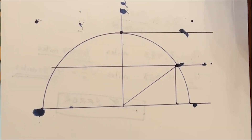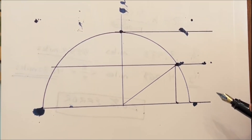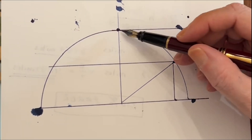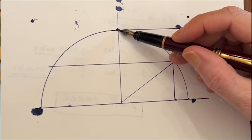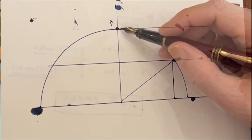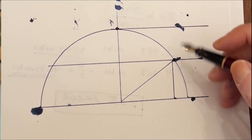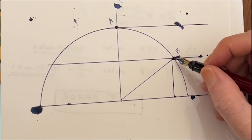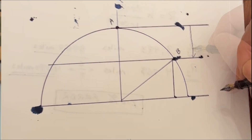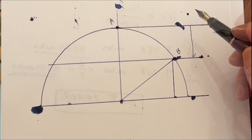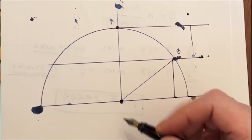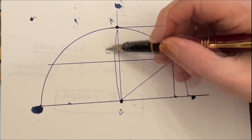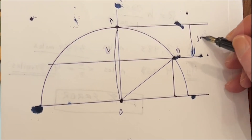Now my pen decided to have a seizure today, so all these little ink splotches will just add to the hominess of the presentation. Say that you are on the surface of a sphere at this point right here — we'll call this point A. And you want to find the drop in earth curve to another point, we'll call it B, that's over here. This length right here would be the radius of the sphere.